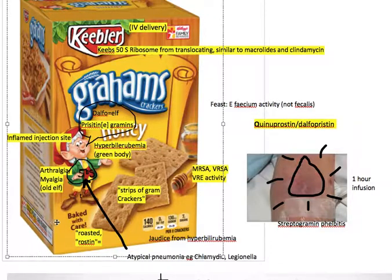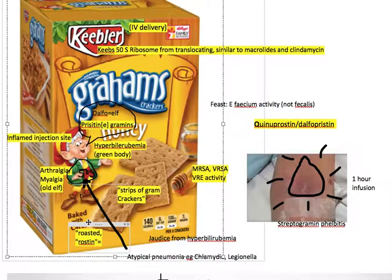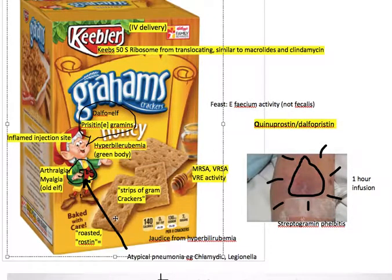The fact that these are roasted crackers can remind us of the drug ending '-pristin' — so Quinupristin. These baked roasted crackers can remind us of that name. So if we see on a test 'pristin,' we think of these Streptogrammin crackers and remember that this is a Streptogrammin and all the other effects we're talking about.